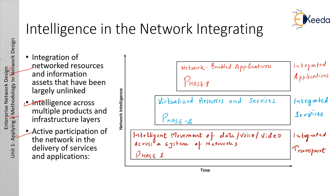Phase 1 is known as integrated transport. Everything — data, voice, and video — consolidates onto an IP network for secure network convergence by integrating data, voice, and video transport into a single standard-based modular network. Organizations can simplify network management and generate enterprise-wide efficiencies.